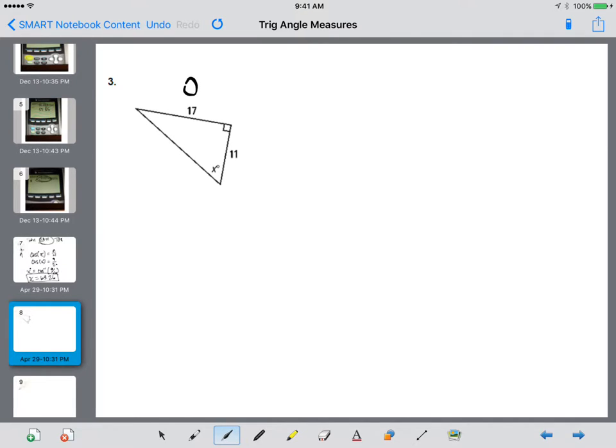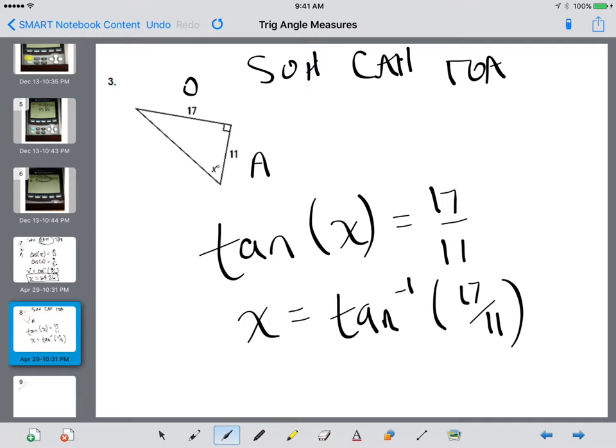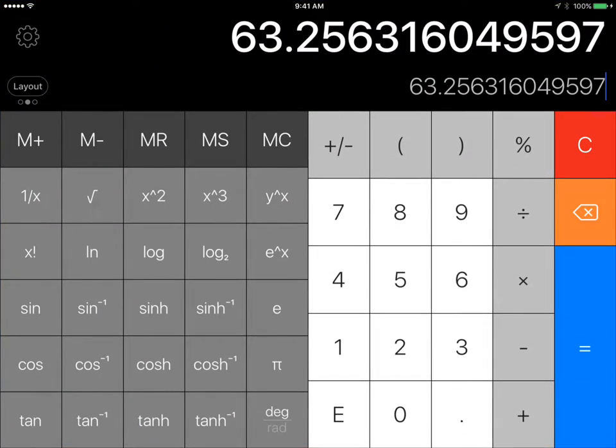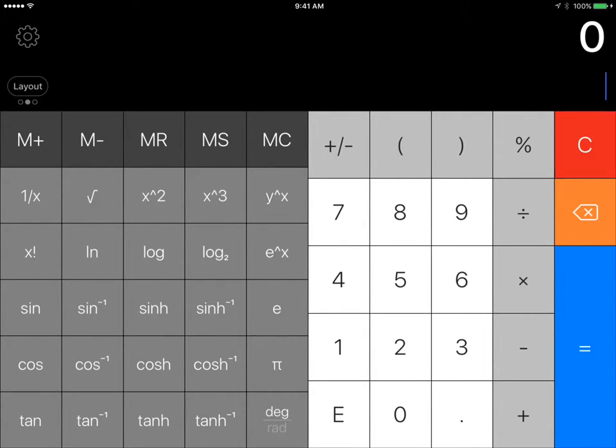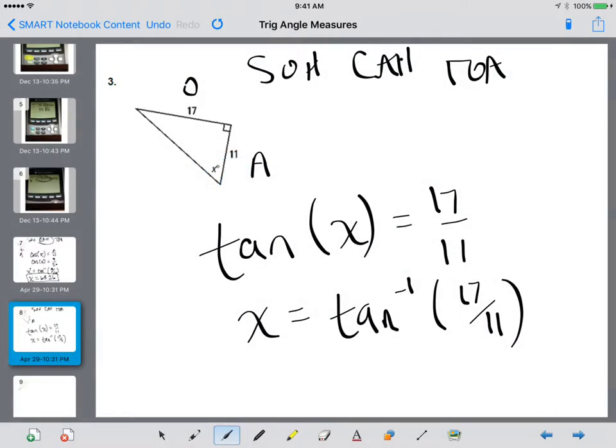Number three, we have the opposite side and the adjacent side, which means we are finding the tangent. So the tangent of x is going to equal, I forgot to write this down, it's opposite over adjacent. So that means 17 over 11. So to find x, we're going to take the tan inverse of 17 over 11. Grab that calculator. Tan inverse. Oh, let's clear it first. Tan inverse 17 divided by 11 equals 57.094. So 57.09.